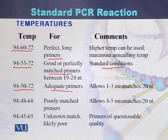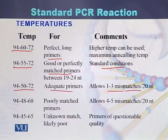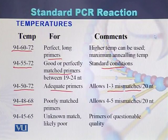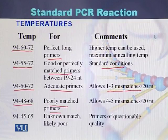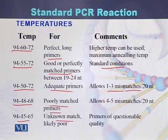A temperature profile of 94, 50, 72 is for adequate primers where there are 1 to 3 mismatches per 20 nucleotides of the primer. If there are mismatches between the primer and the template, this profile is used. A profile of 94, 48, 64 is for poorly matched primers with 4 to 5 mismatches per 20 nucleotides. Finally, 94, 45, 65 is used for unknown primer-template match, for primers of questionable quality.